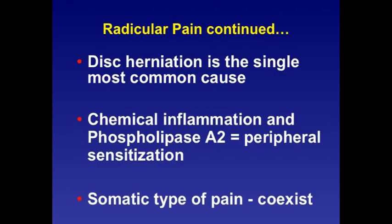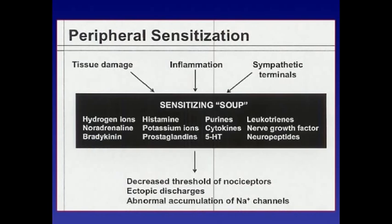Somatic pain typically coexists with radicular pain and is usually myofascial. In peripheral sensitization, there are many chemical mediators involved that form what we call a sensitizing soup — which includes hydrogen ions, noradrenaline, bradykinin, histamine, potassium ions, and neuropeptides. This sensitizing soup causes a decreased threshold of nociceptors, ectopic discharges in the inflammation area, and abnormal accumulation of sodium channels.